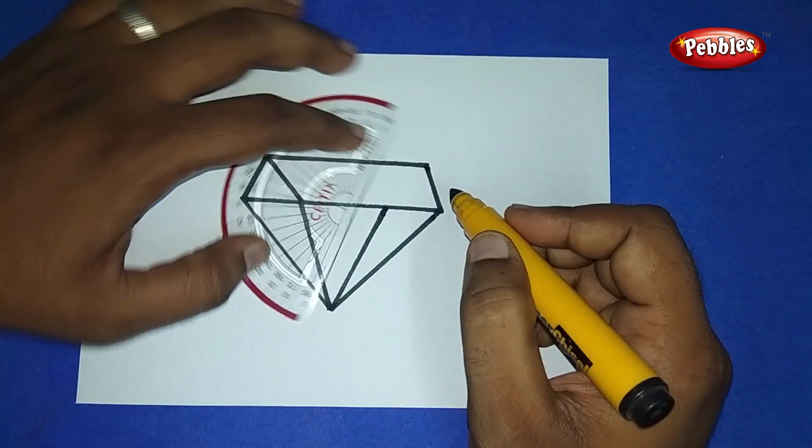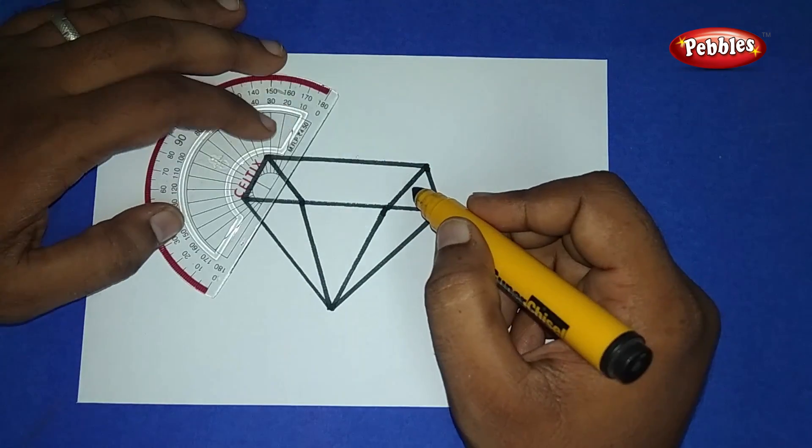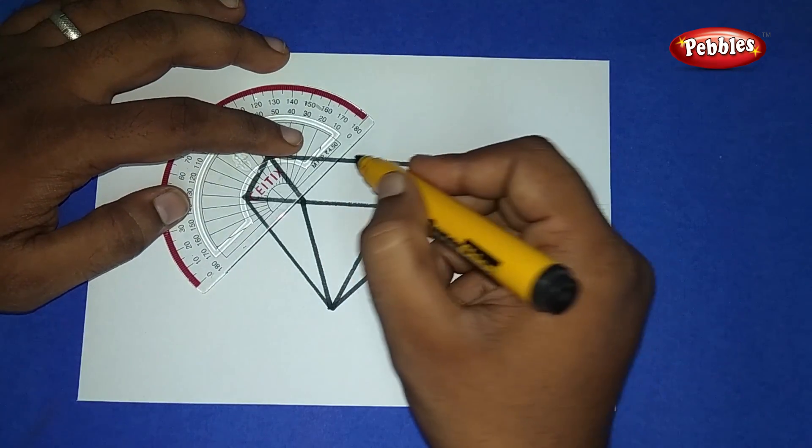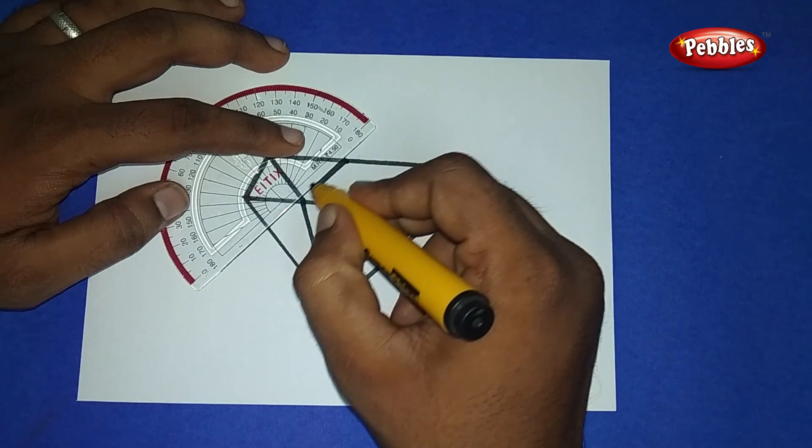the center small triangle with that line. Again, draw another slanting line on both the center.